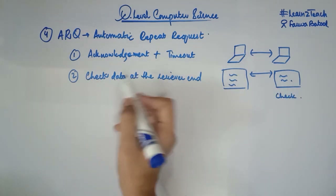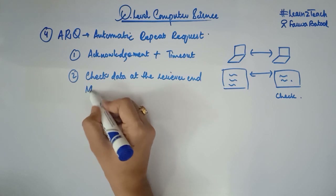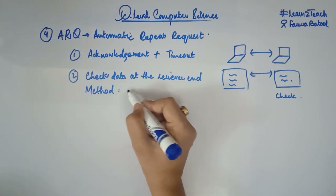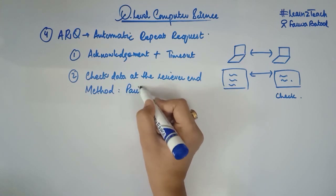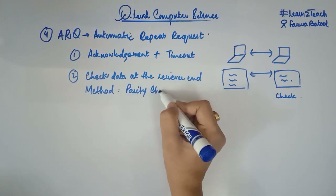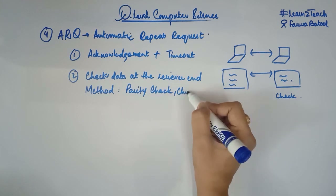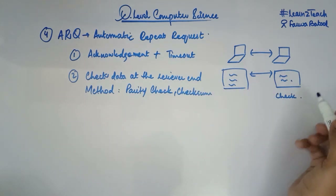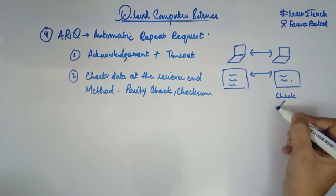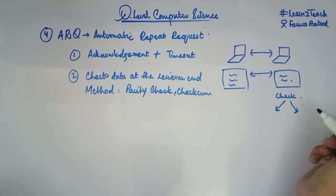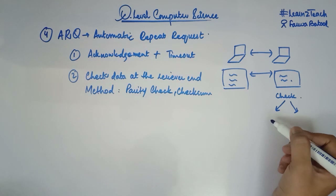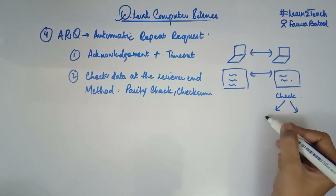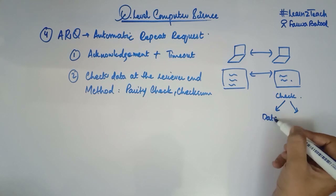For this, the methods that can be used for error detection are either parity check or checksum. Any of these methods can be used in order to detect the error. Once the data has been checked, we can have the results as follows: either the data is received correctly, or the data is incorrect.